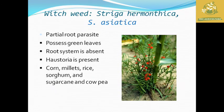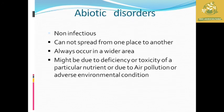After that we are going to see witchweed, also known as Striga species. It is a partial root parasite which processes green leaves but lacks a true root system. Haustoria are present. It is found infecting corn, millets, rice, sorghum, sugarcane, and cowpea. It is one of the important root parasites.